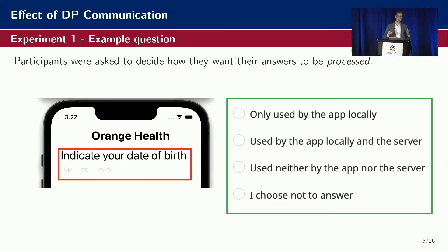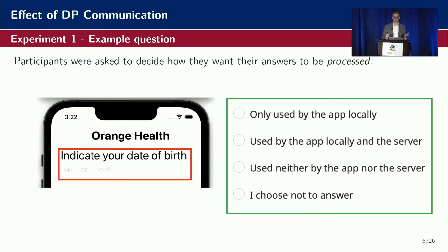Participants saw a mock-up of an iOS app where they were posed 14 questions — for example, date of birth, weight, height, but also more sensitive questions like income level and medical history. They did not actually have to answer these questions, but rather indicate how they would want their potential answers to be processed. They could choose to have it used only by the app locally, used by the app and the server, not share with either, or choose not to answer.